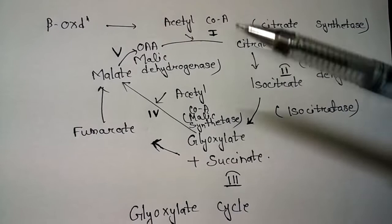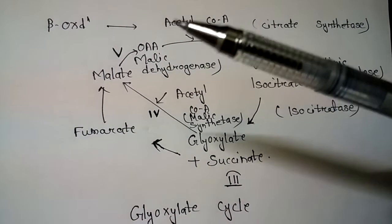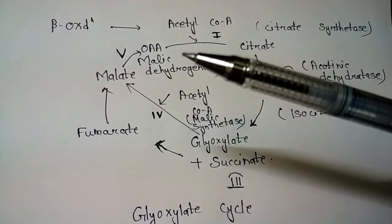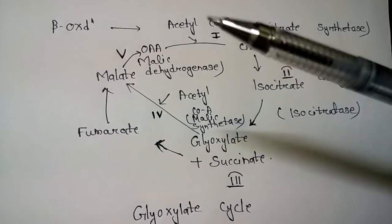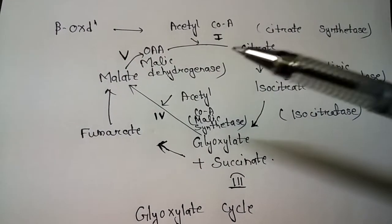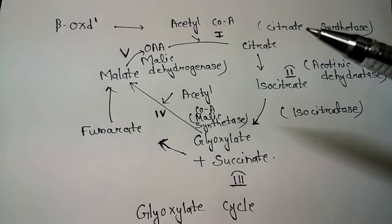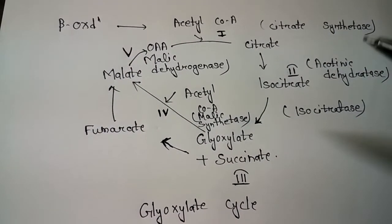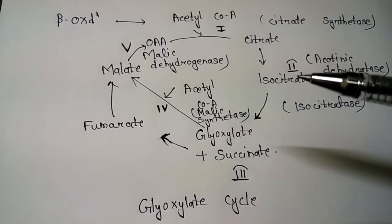The first step is oxaloacetic acid, a four carbon compound, which binds with acetyl coenzyme A to form citrate. The enzyme required for this reaction is citrate synthetase. The next step is the formation of isocitrate, which requires the enzyme aconitase dehydratase.